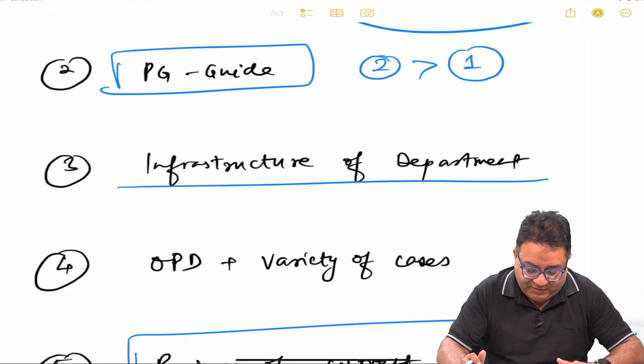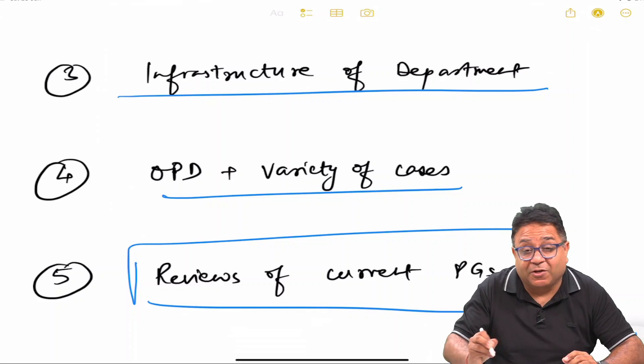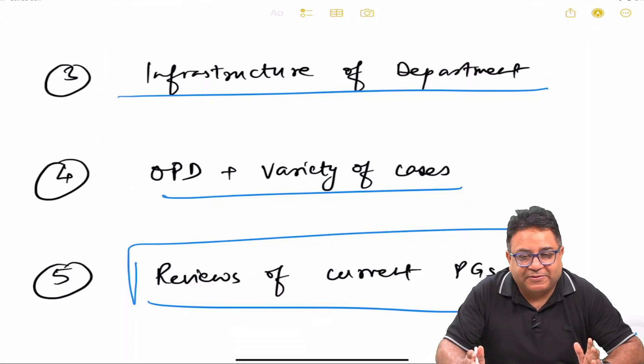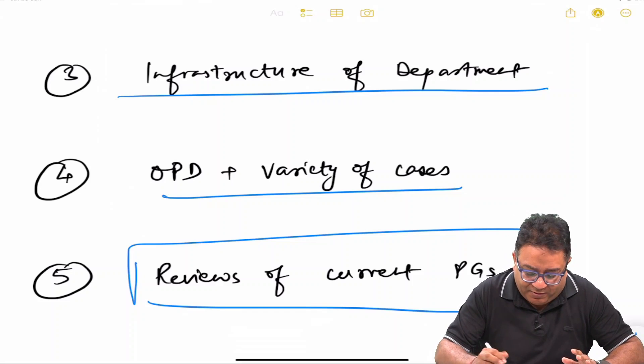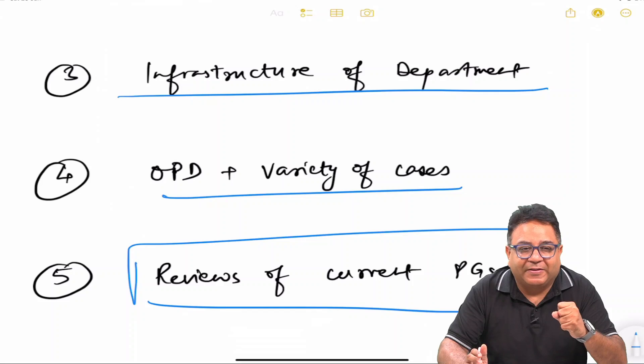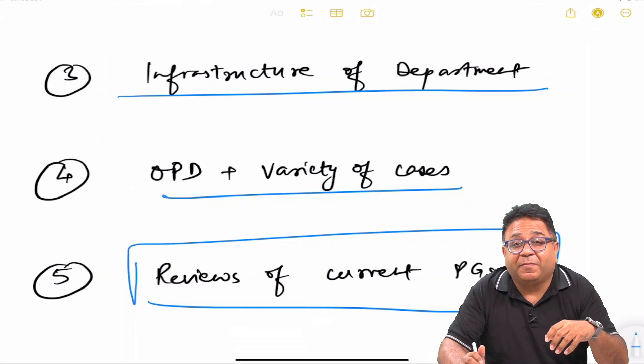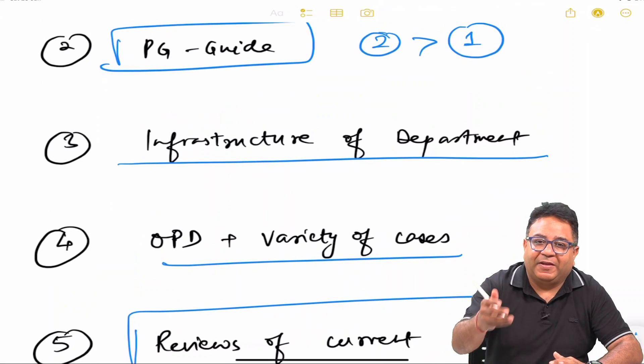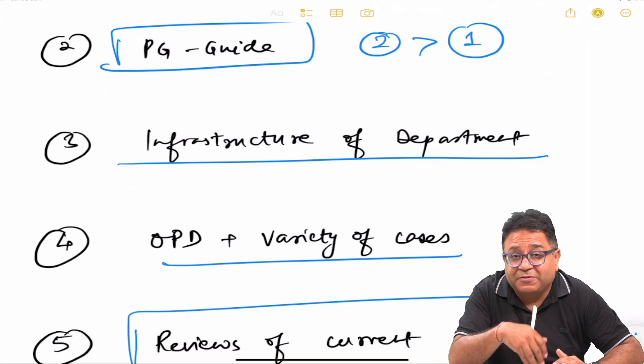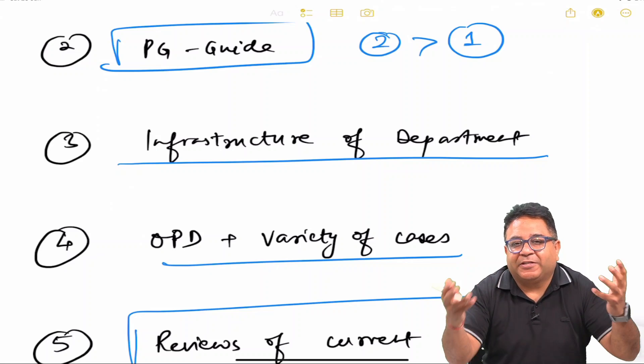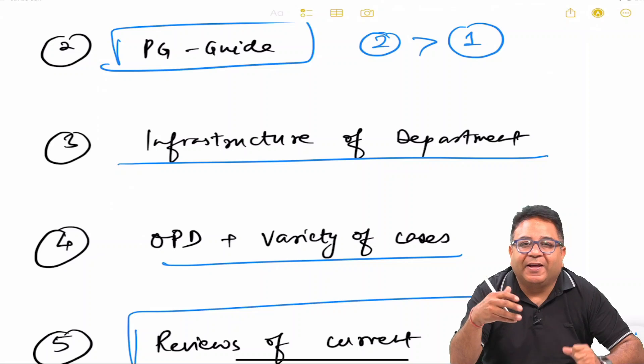Then comes OPD and variety of cases. This matters a lot for those who are going to choose oral surgery and other specialities. OPD has to be good. There are certain GDCs which are lacking in OPD in certain departments majorly, so you should be aware of that. We have a Telegram group, I'll share the link in the chat section of this video as well. As much as possible, we'll give you contacts in as many GDCs as possible in India, so feel free to ask in this regard.